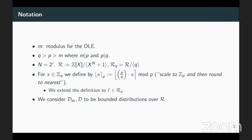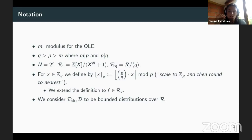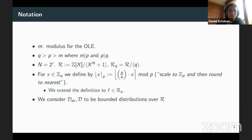For an integer in Z_Q, we define the rounding towards P as P divided by Q times X, then rounded as a real value. Think of this as scaling a value from Z_Q down to Z_P and rounding to the nearest integer. We extend this definition to polynomials by applying it to each coordinate. We also have two bounded distributions that we will draw values from in a moment.